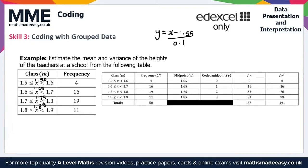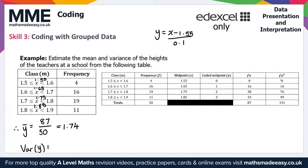Now we calculate the mean and variance estimates for y. y-bar equals Σfy over Σf, which is 87 over 50, giving y-bar equals 1.74. For the variance of y, we compute Σfy² over Σf minus y-bar squared: 191 over 50 minus 1.74 squared.